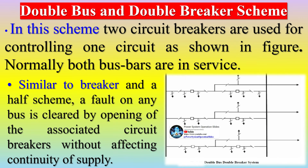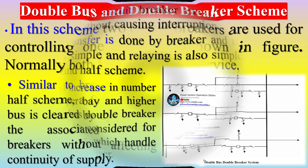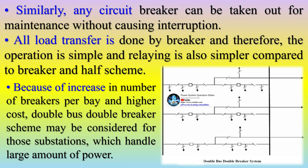In the double bus and double breaker scheme, two circuit breakers are used for controlling one circuit. Normally both busbars are in service. Similar to the breaker and a half scheme, a fault on any bus is cleared by opening the associated circuit breakers without affecting continuity of supply, and any circuit breaker can be taken out for maintenance without interruption. All load transfer is done by breakers, so operation is simple and relaying is simpler compared to the breaker and a half scheme. Because of the increased number of breakers per bay and higher cost, this scheme may be considered for substations handling large amounts of power.